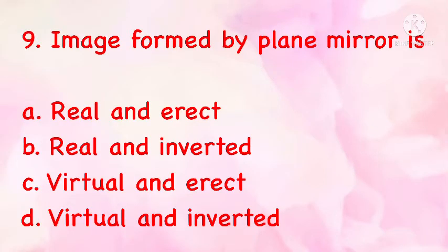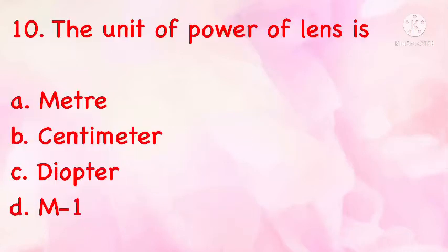Image formed by a plane mirror is: (a) real and erect, (b) real and inverted, (c) virtual and erect, (d) virtual and inverted. The correct answer is (c): virtual and erect.